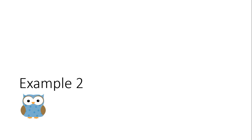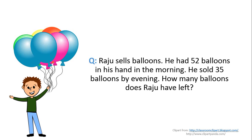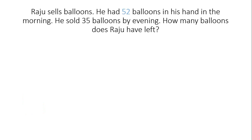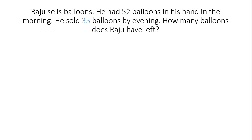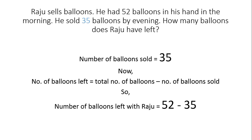Example 2. Raju sells balloons. He had 52 balloons in his hand in the morning. He sold 35 balloons by evening. How many balloons does Raju have left? Answer. We know that the total number of balloons equals 52. We also know that the number of balloons sold equals 35. Number of balloons left equals total number of balloons minus number of balloons sold. So, number of balloons left with Raju equals 52 minus 35.